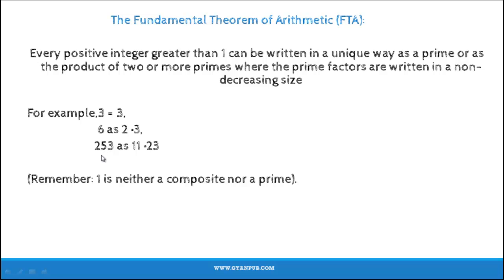And also consider, for example, 253. It is written as 11 times 23, i.e., 253 is written as the product of 2 prime numbers.